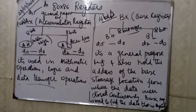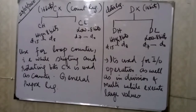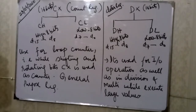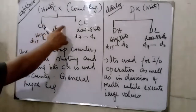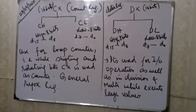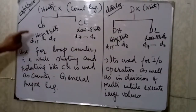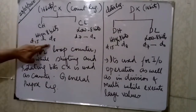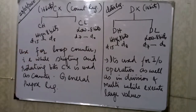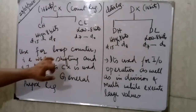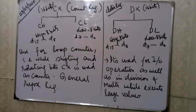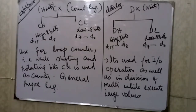CX is the count register. It is again a 16-bit register. CL is the low 8 bits from D0 to D7, and CH is the high 8 bits from D8 to D15. CX is used as a counter — especially while shifting and rotating bits. It is used as a counter, which is the second important use of this general-purpose register.